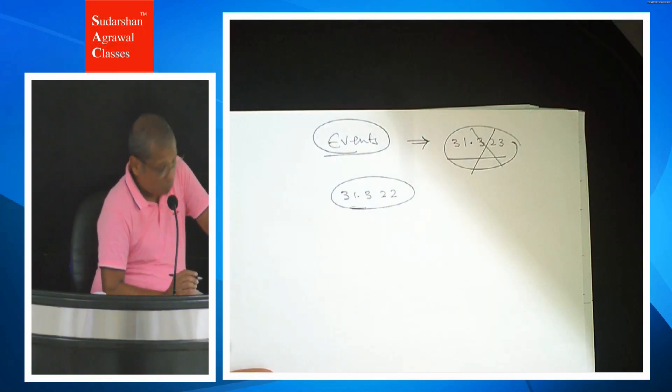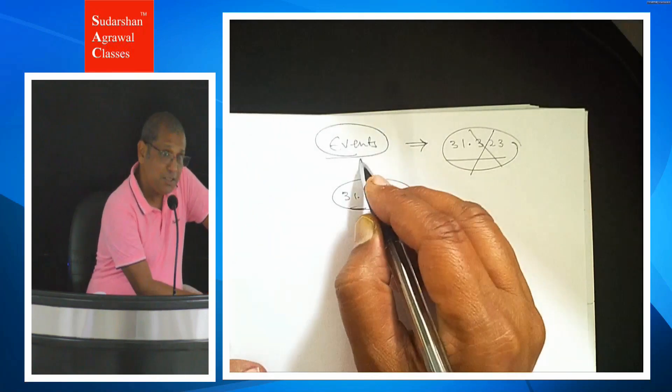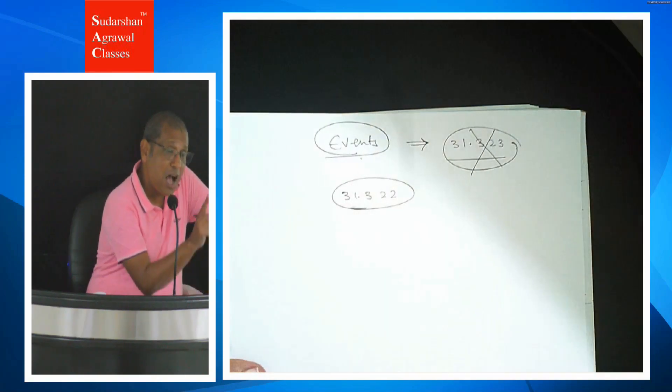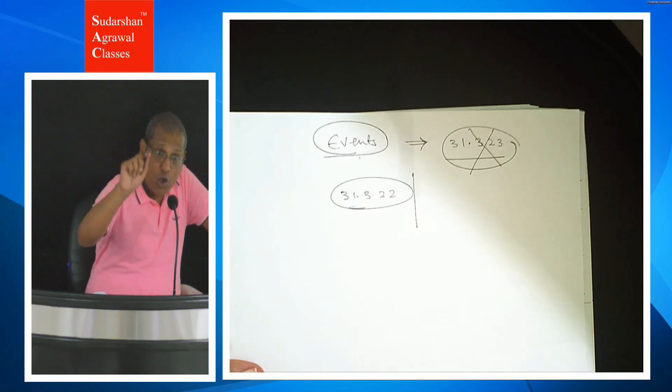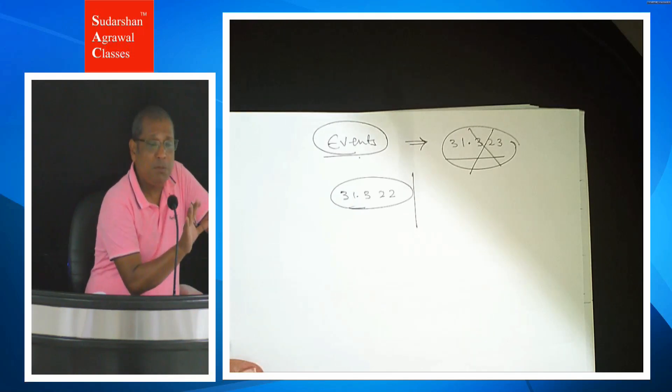Now, events occurring after the balance sheet date. Balance sheet date is 31/3/2023. Balance sheet as on 31/3/2023 - balance sheet date, reporting date, balancing date, year ending date. This is a very good accounting standard. You will have read a lot of things before, this is a revision.